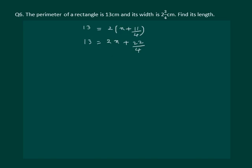We can simplify the last term. Taking the constant term to the other side of the equality, we get 13 minus 11 by 2 is equal to 2x. Taking LCM, we get 26 minus 11 equal to 2x, which gives us 15 by 2 is equal to 2x.